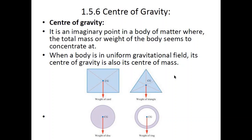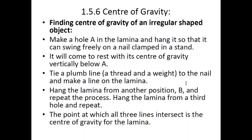You can draw lines from one edge to another edge and the point at which those lines intersect is the center of gravity. For a hollow ring, the center of gravity remains in the center. For a chair, the center of gravity would be somewhere between its legs.